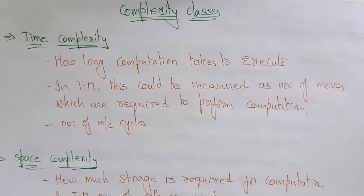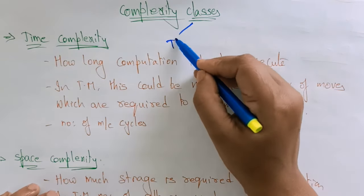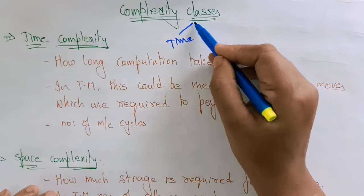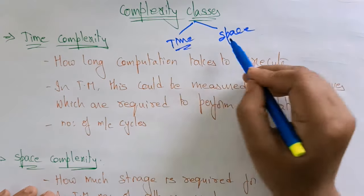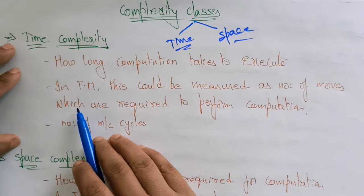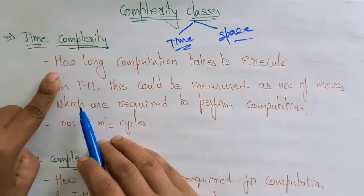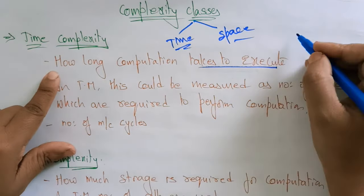Hi students, welcome back. Coming to the next topic in the subject theory of computations is the complexity classes. The complexity classes are of two types: based on time complexity or on space complexity. Time complexity means how long the computation takes to execute.